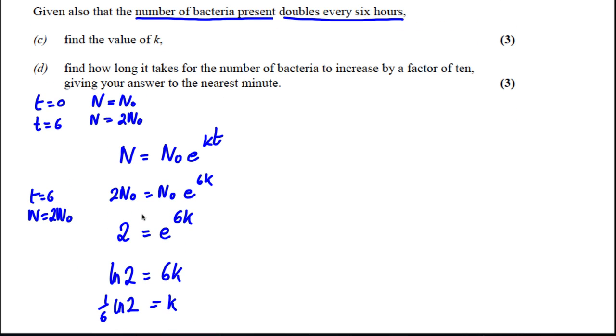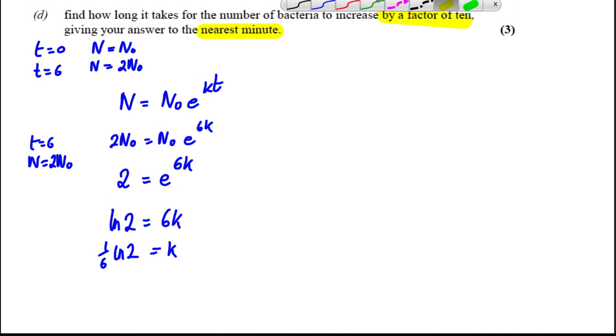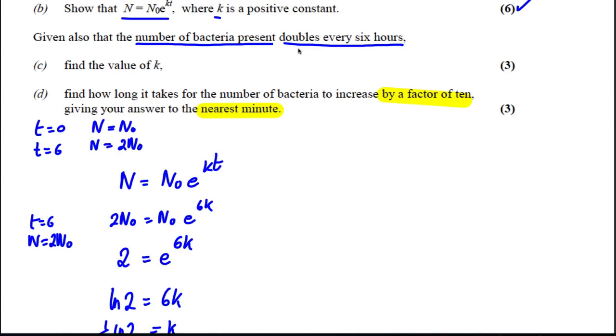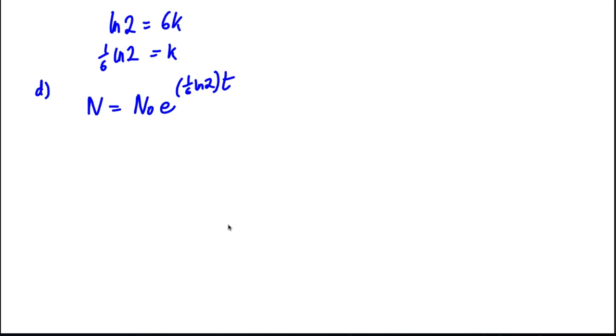And then it says, find how long it takes for the number of bacteria to increase by a factor of 10, giving your answer to the nearest minute. So we want to increase by a factor of 10 to the nearest minute. So the first thing we're going to do is, this now is our K forever. We're going to write for part D our equation here. N is clearly equal to N₀e^(1/6 ln 2 × T). We have now found K.